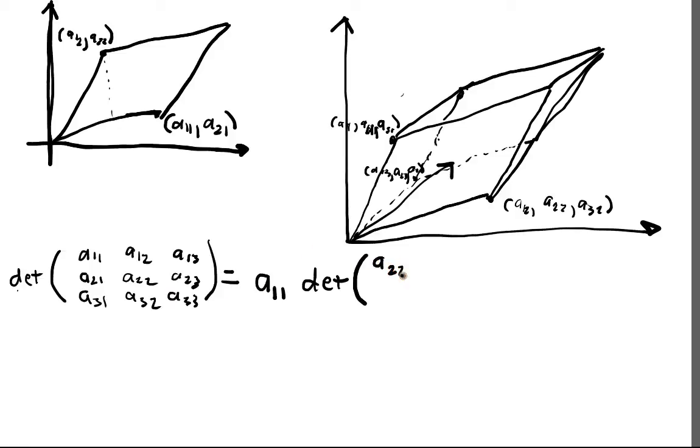I'm going to compute this determinant by essentially computing two-by-two determinants inside of the matrix. Notice I'm subtracting there, so it's a little different: A21, A23, A31, A33.